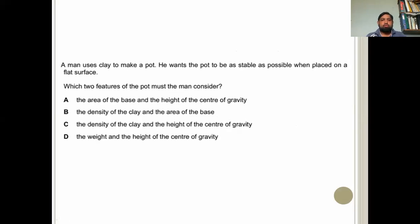A man uses clay to make a pot. He wants the pot to be as stable as possible. Which two features of the pot must be considered? The area of the base and the height of the center of gravity. Yes, the first option, area of the base and the height of the center of gravity.